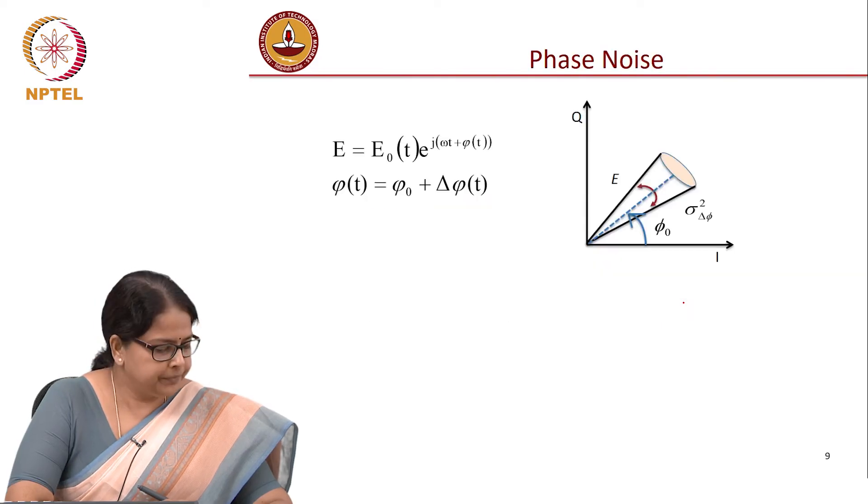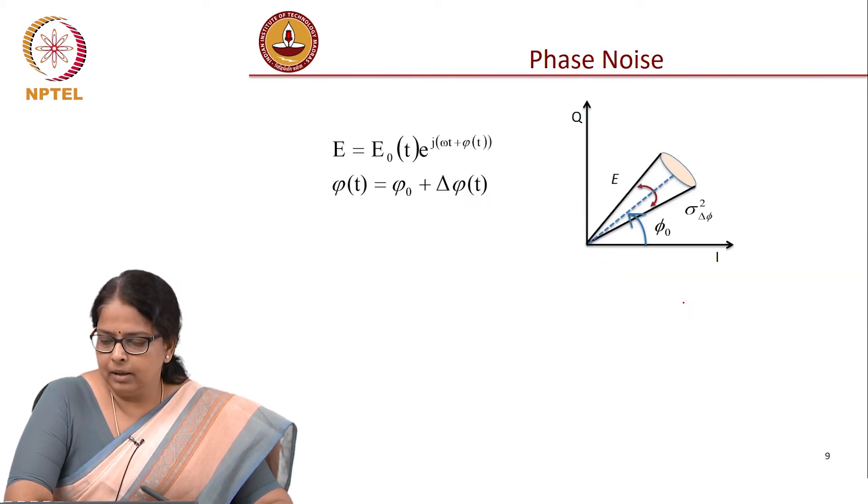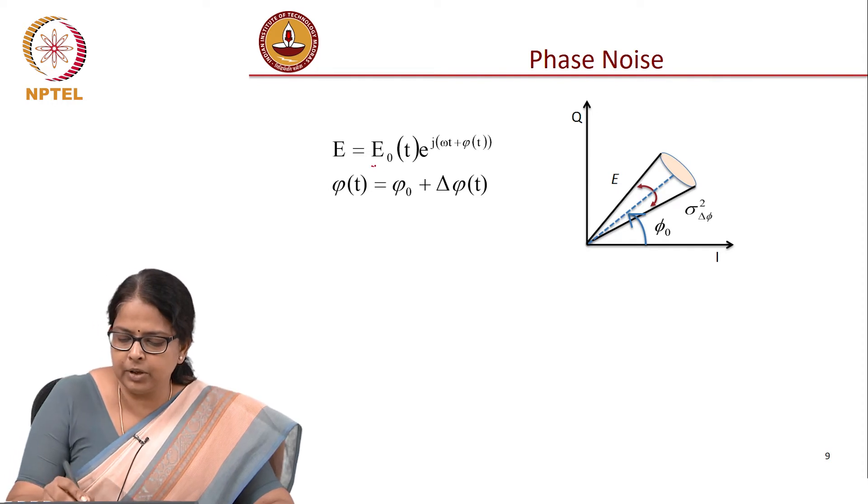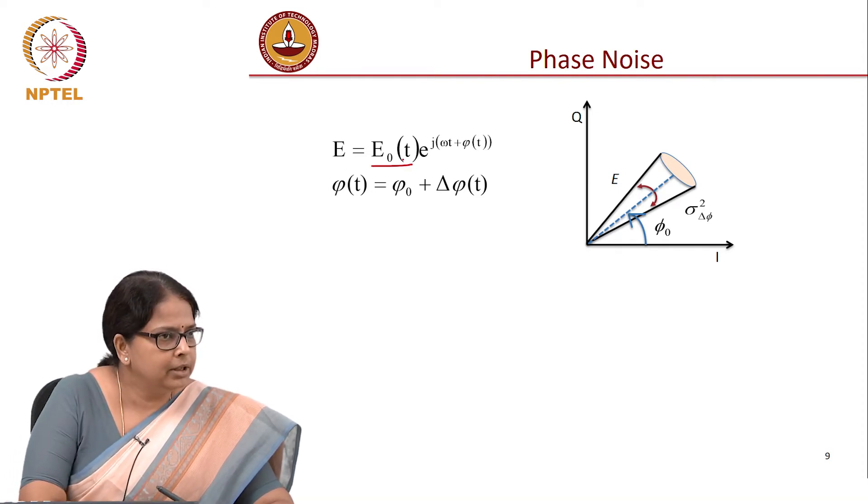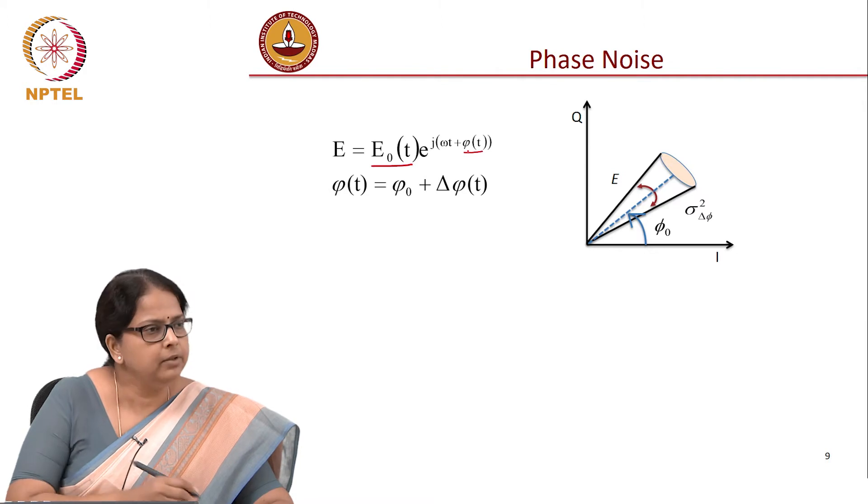Now, let us move to phase noise. Intensity wave noise was talking about the fluctuations in amplitude. Phase noise, as we said, is a fluctuation in phase.